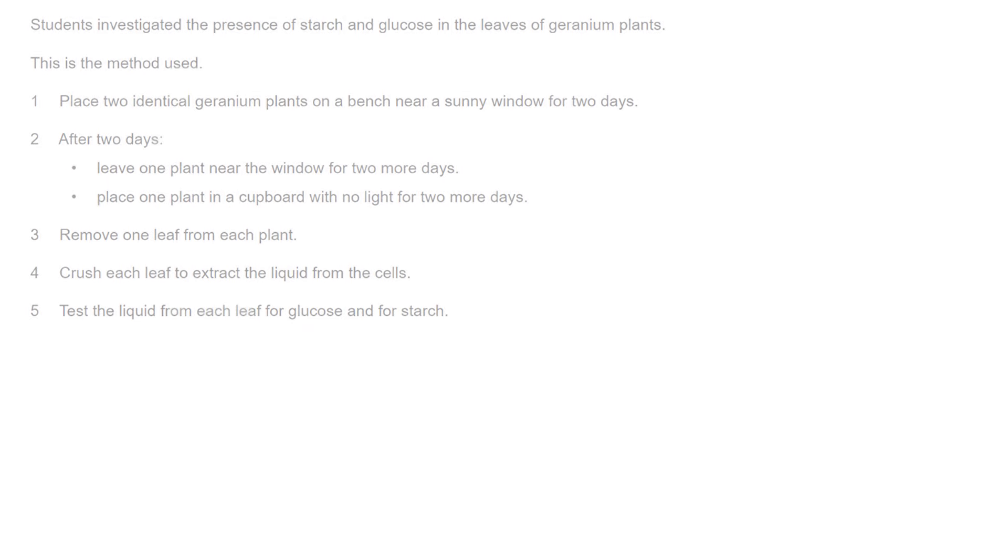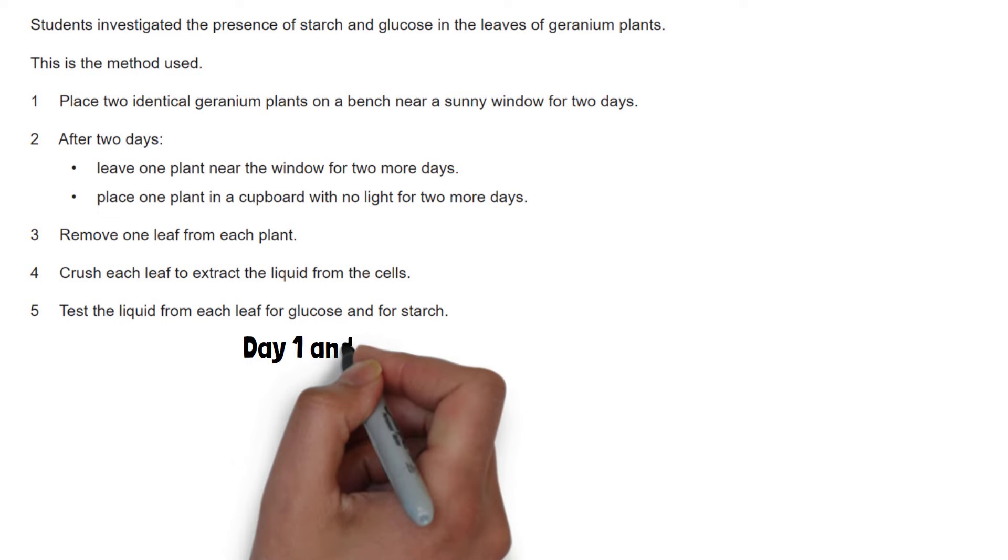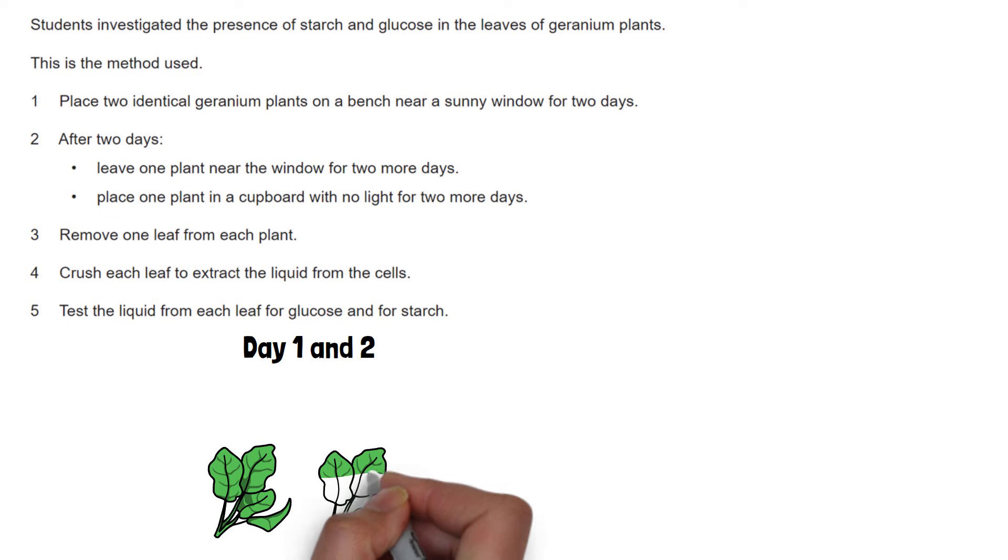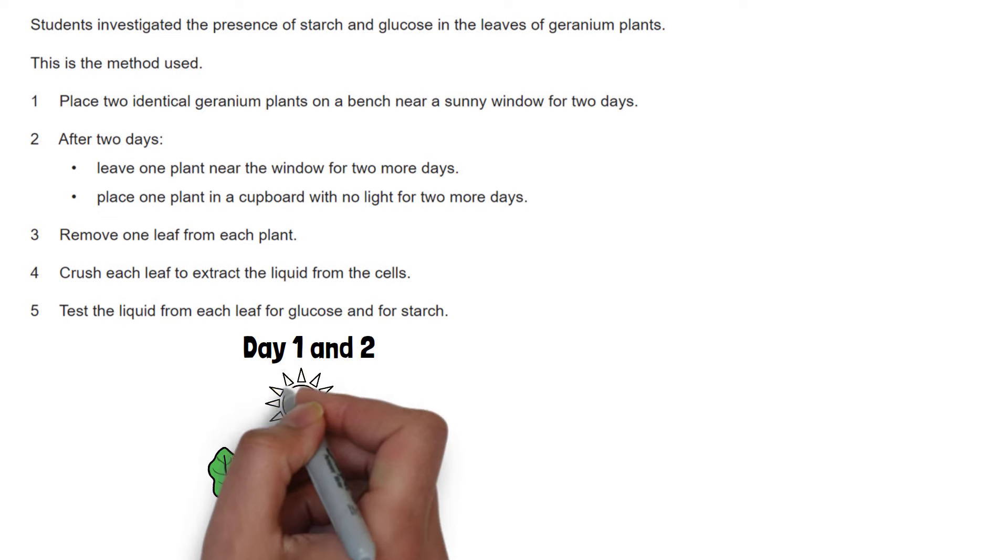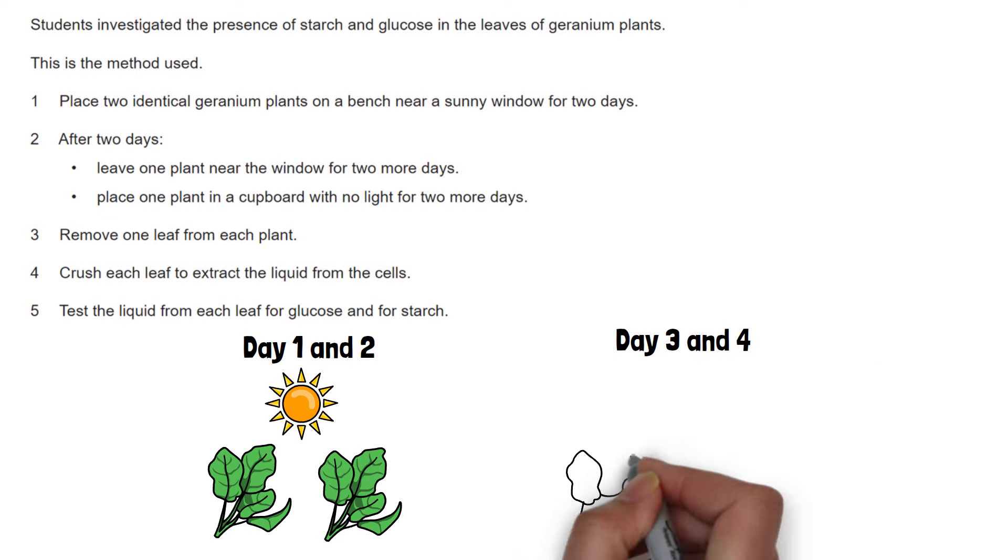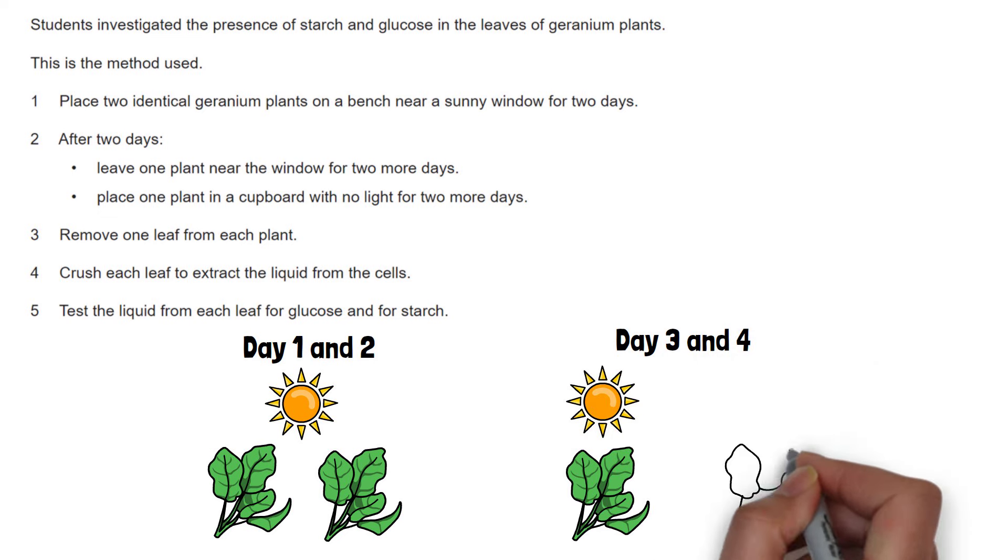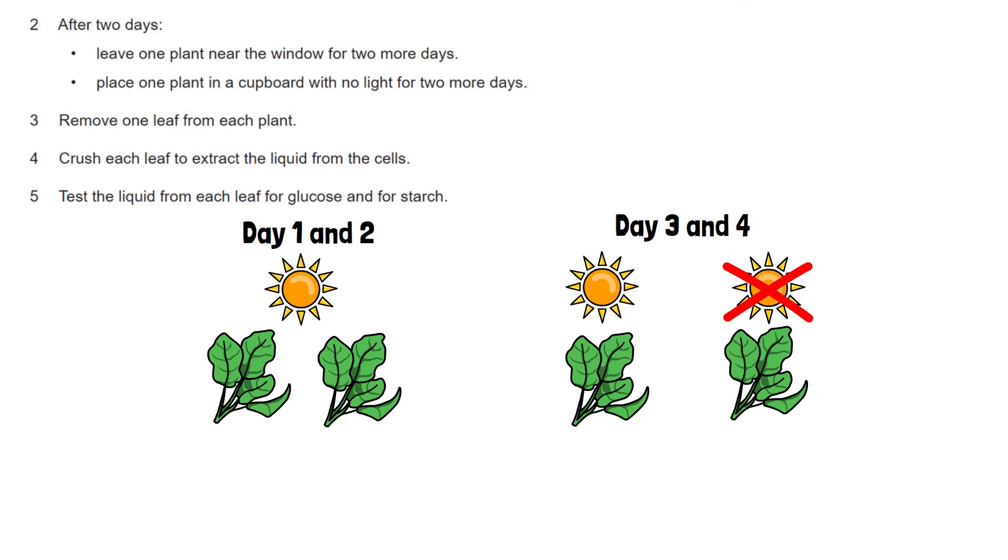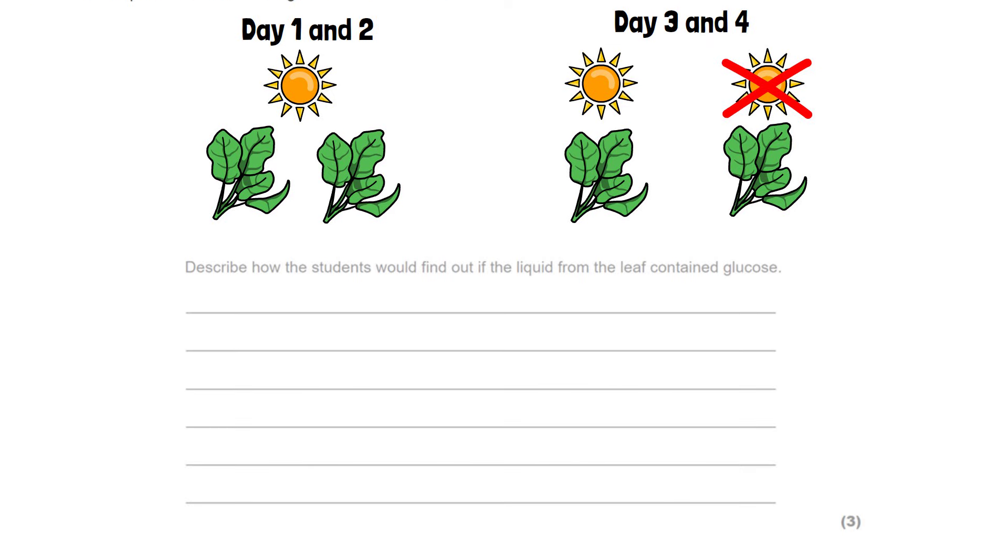This last question is where students get really really confused only because there's lots of information and the following questions relate back to this information. So let's go through it. Students are investigating the presence of starch and glucose in some leaves. They place two identical plants on a bench near a sunny window for two days. After the two days they leave one plant near the window for two more days but they take one of the plants and place that in a cupboard with no light for two more days. So one of them is getting four days of sunlight and the other is only getting the first two days. They then take a leaf from each of the plants, crush it up and then extract the liquid. They can then test the liquid from each leaf for glucose and starch.